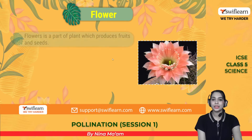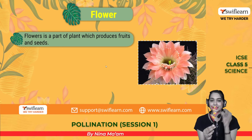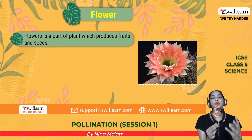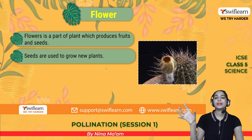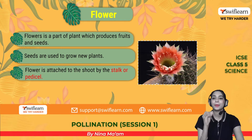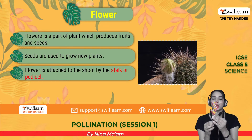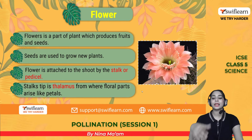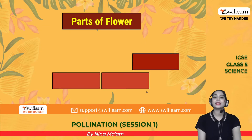Let's look at the flowers. A flower is the part of a plant which produces fruits and seeds. In this flower, there are ovaries and ovules — that is why a flower produces fruits and seeds. Seeds are used to grow new plants. A flower is attached to the shoot by a stalk or pedicel. The stalk's tip is the thalamus, from where floral parts like petals arise.